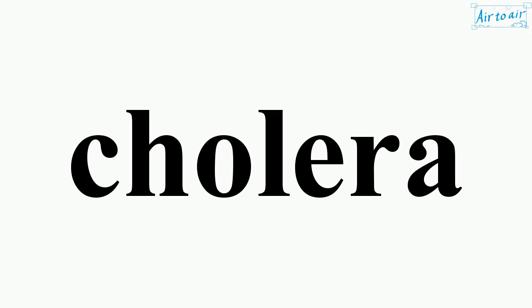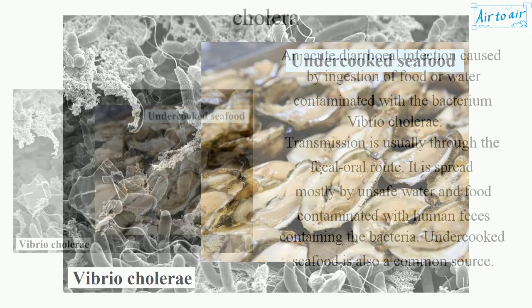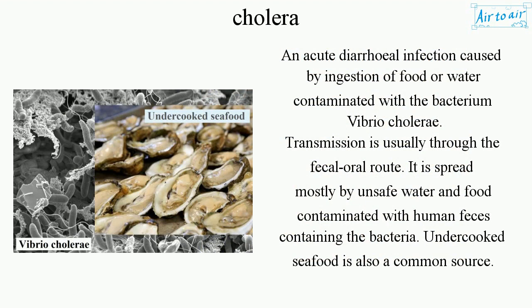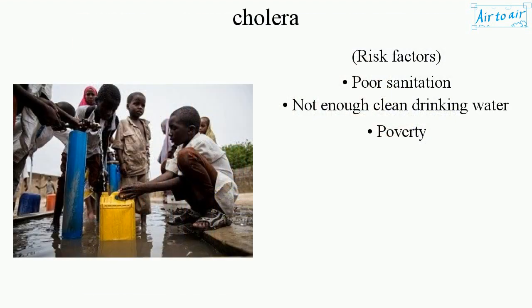Cholera is an acute diarrheal infection caused by ingestion of food or water contaminated with the bacterium Vibrio cholerae. Transmission is usually through the fecal-oral route, spread mostly by unsafe water and food contaminated with human feces containing the bacteria. Undercooked seafood is also a common source. Risk factors include poor sanitation, not enough clean drinking water, and poverty.